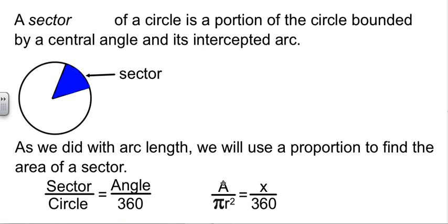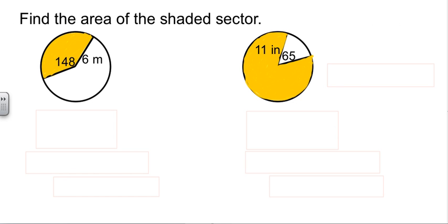And you'll remember the arc length formula. We had an L here, and we had 2 pi R instead of pi R squared, because we were talking about a length instead of an area.